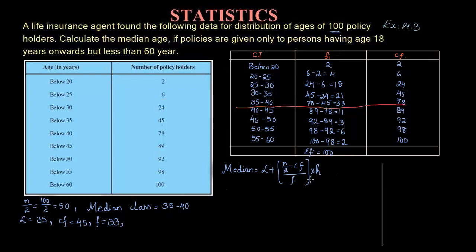H stands for class size. How do we find it? Upper limit minus lower limit. Taking the second class interval: 25 minus 20 equals 5. So H is 5. Now we have all the values and can substitute them into the formula.